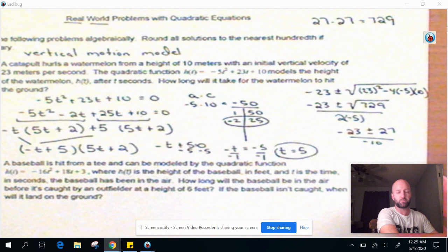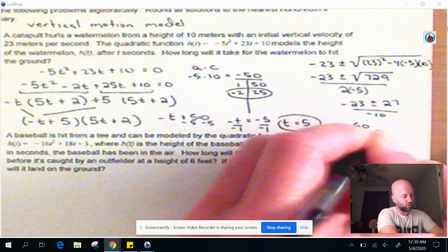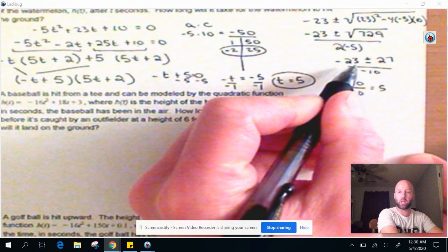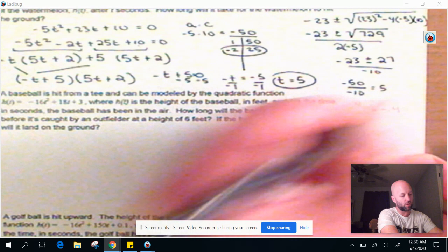So -23 ± 27, this is 27, all over -10. So we have to get two solutions here. So the first one is -23 - 27, which is -50 over -10, which is positive 5 when we divide out. And our second one is -23 + 27, which is going to be positive 4. The denominator is still -10, and it's our -0.4. So there are the same two solutions we came up with when we used our factoring method.